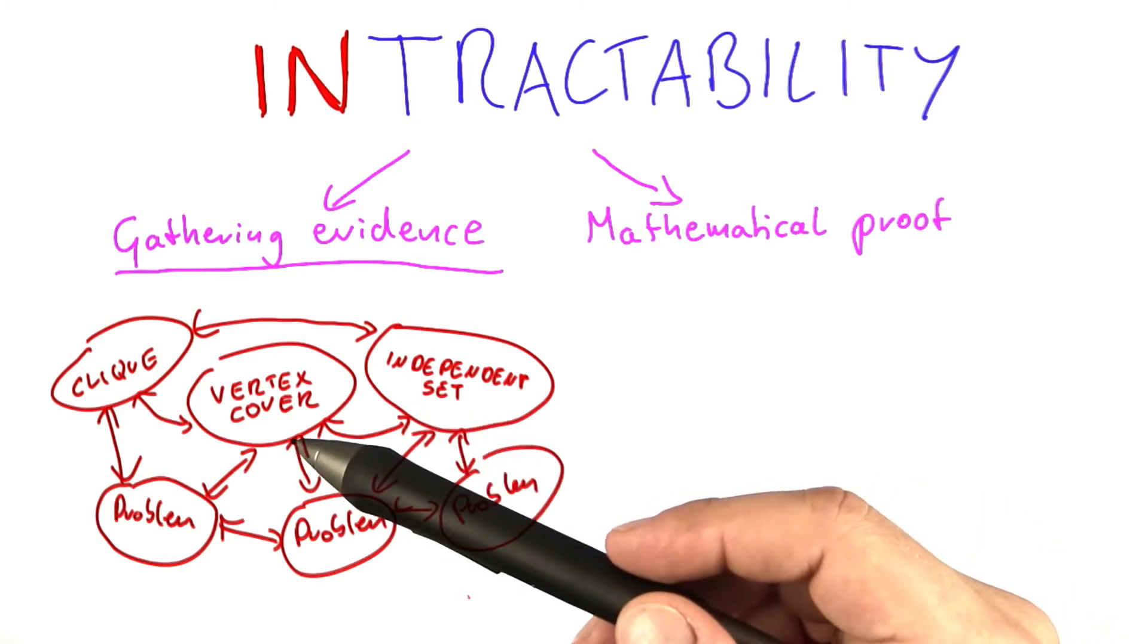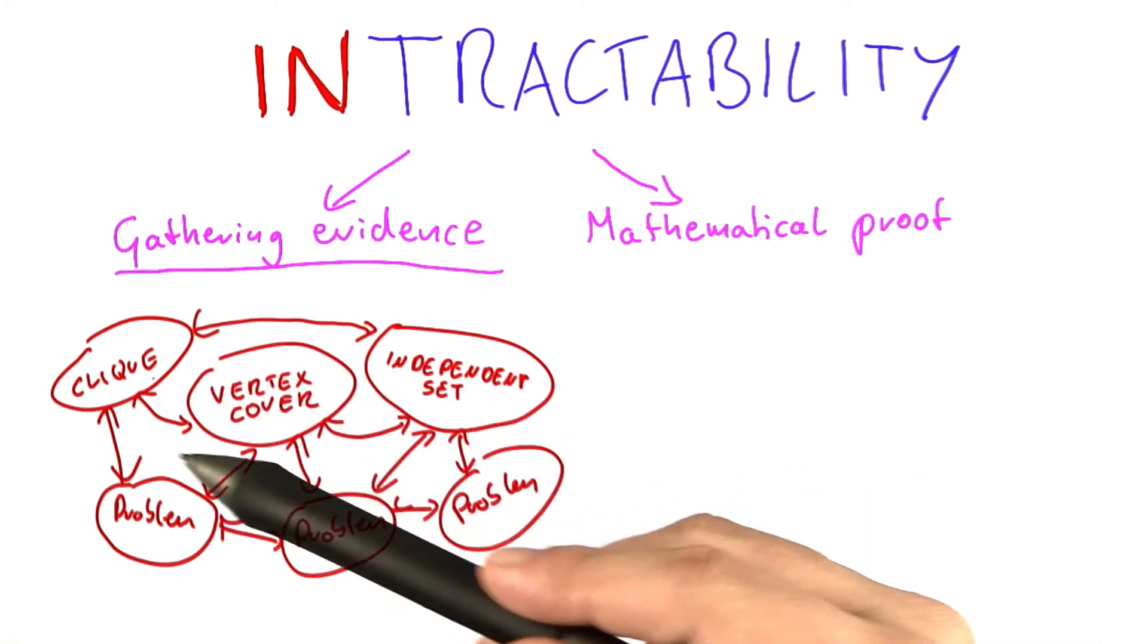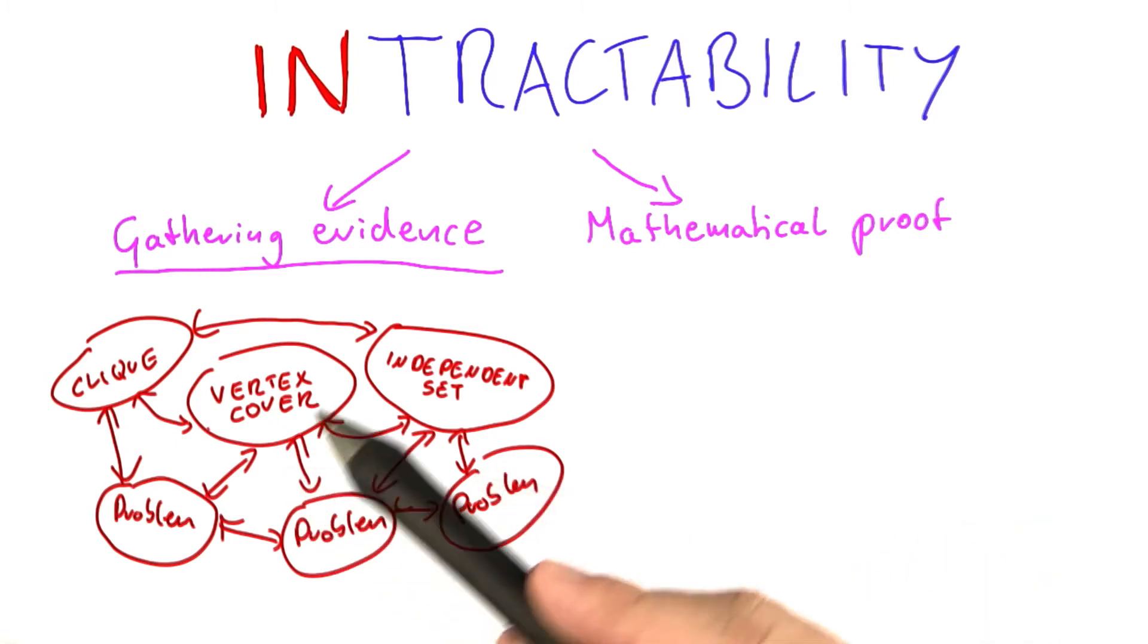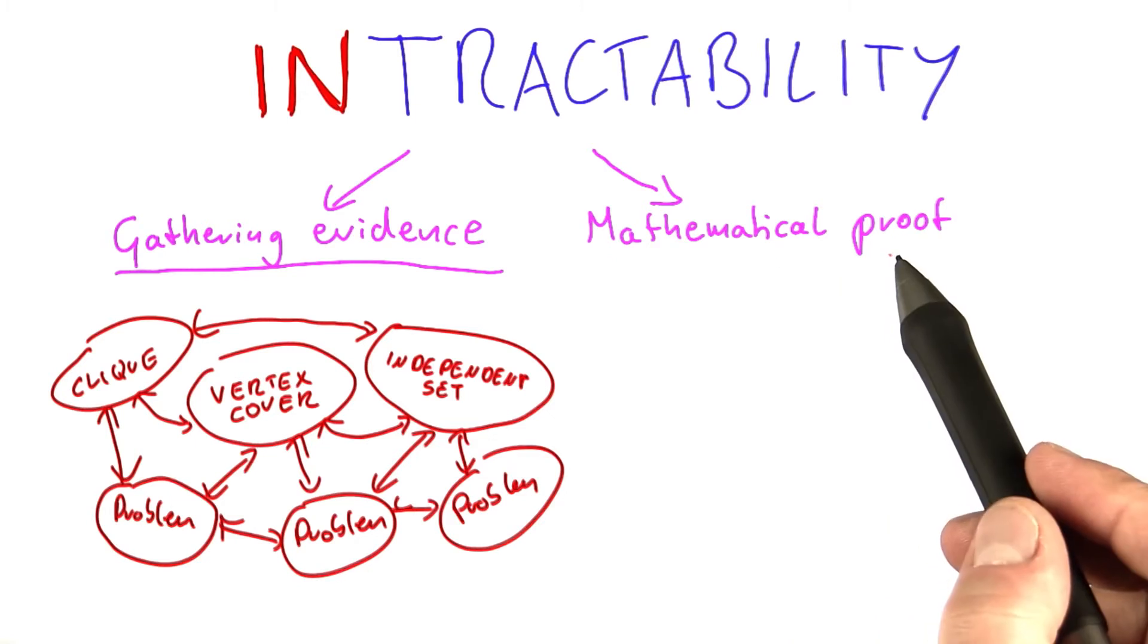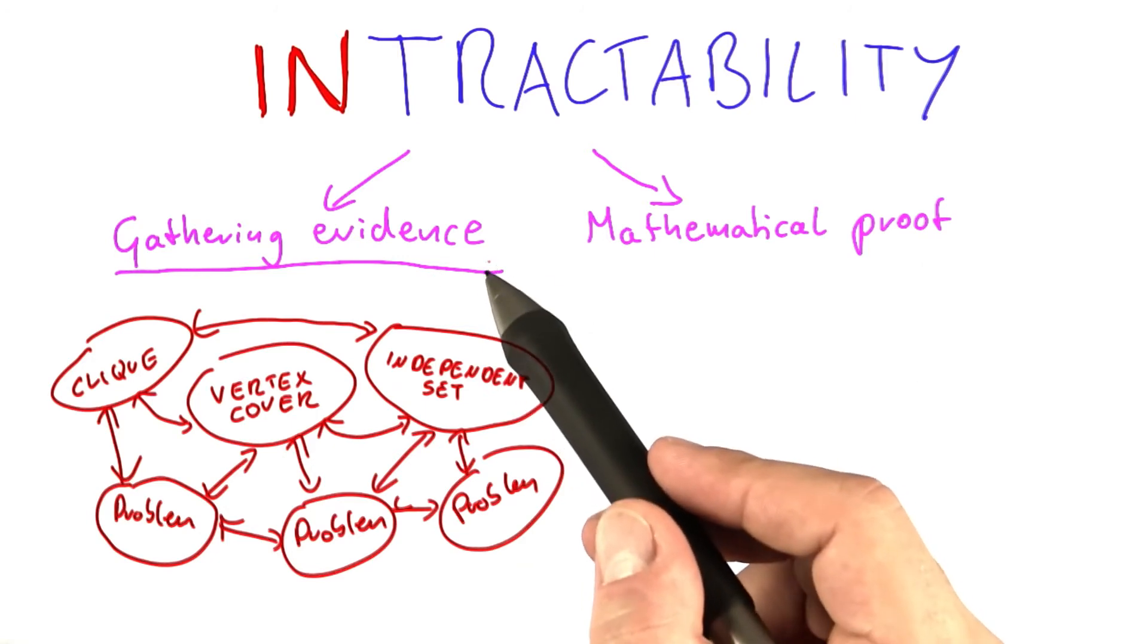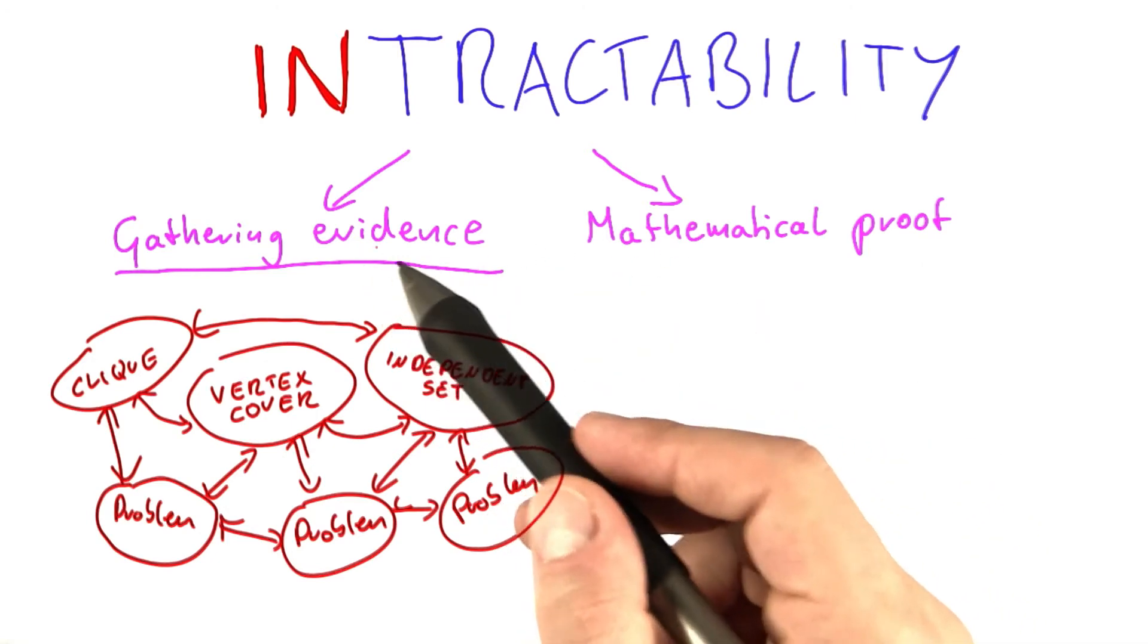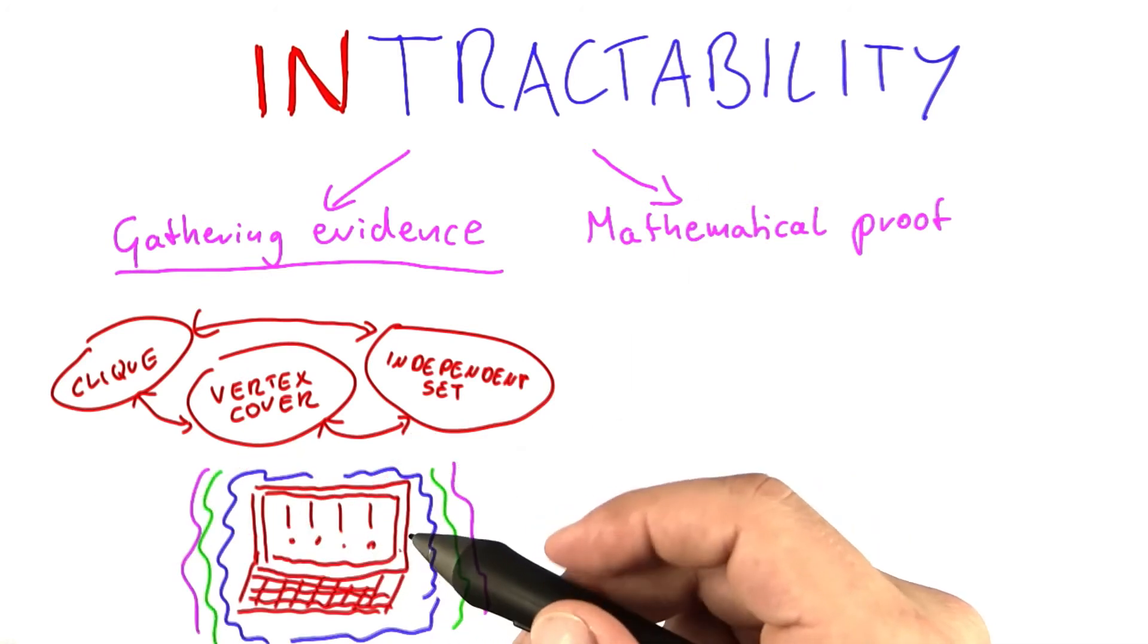In fact, I will introduce you to such a collection of problems at the end of this unit, and we'll also have a closer look in the next units. But today, actually, we're going to do something that is a little bolder. We're still not going to be able to achieve a mathematical proof of intractability, but we're going to do something that I would say is somewhere in between gathering evidence and a mathematical proof.